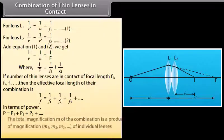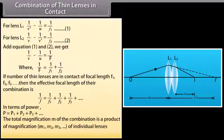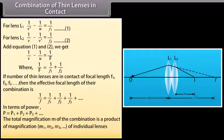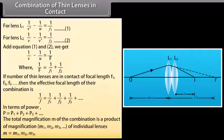The total magnification M of the combination is the product of the magnifications M1, M2, M3, and so on, of the individual lenses: M = M1 × M2 × M3.